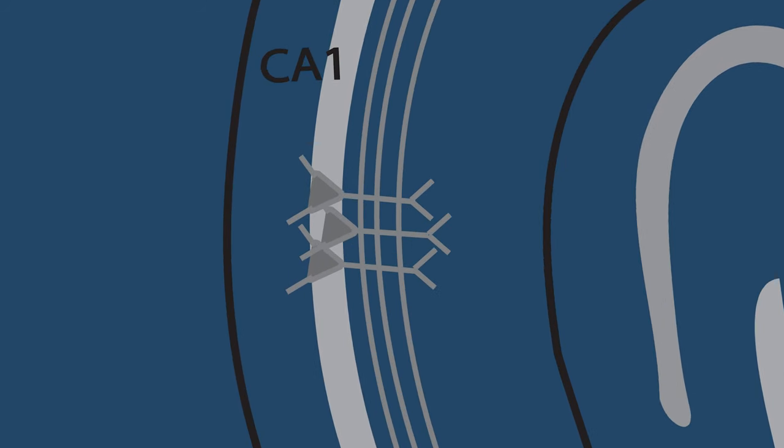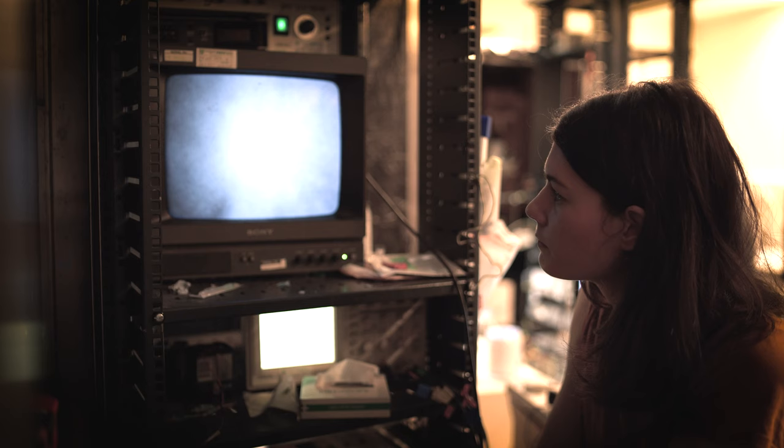First, we position the stimulation electrode. Then we increase the magnification on the microscope, so that we can see the cell bodies of individual neurons.